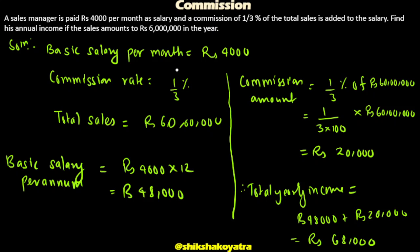Annual income equals basic salary plus commission. We need to find the commission amount. Commission amount equals 1/3% of total sales. Commission percentage is 1/3% of total sales, which is ₹60 lakhs.